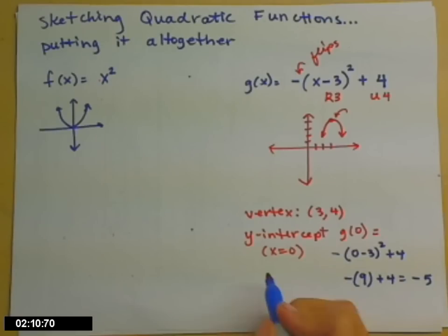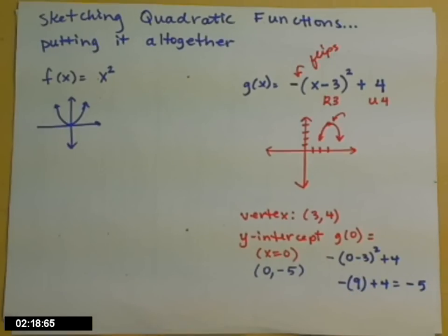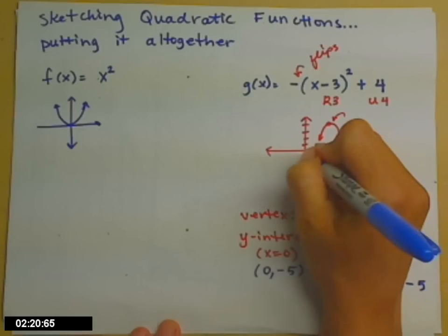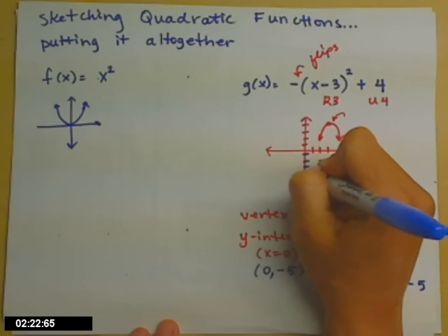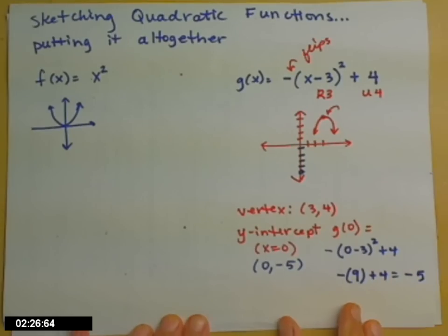But remember, x was 0. So when we talk about intercepts, we're talking about points. So we're talking about the point 0, negative 5 for the y-intercept. That means that if I were to carry my graph down, the parabola would include that point there on the y-axis.